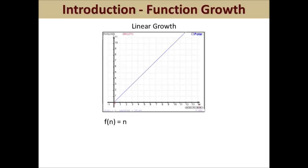Let's say we have a function f of n equal to n. If we graph f of n, we get a graph that looks linear because y grows at the same rate as x, or n as we refer to it for runtime. Therefore, when f of n is equal to n and n is equal to 5, we know that f of 5 is equal to 5, so y and x grow at the same rate.